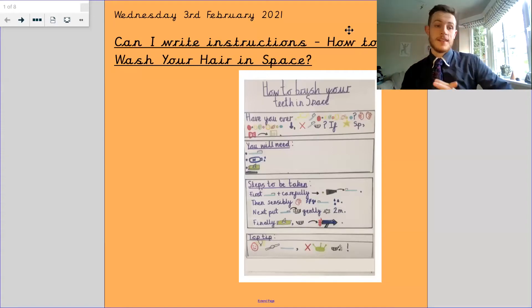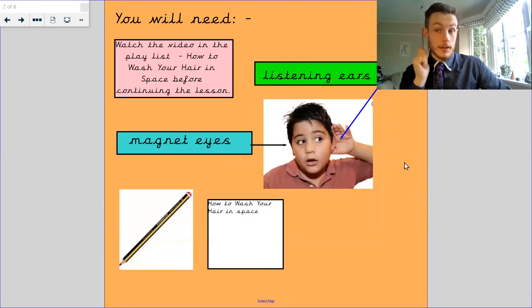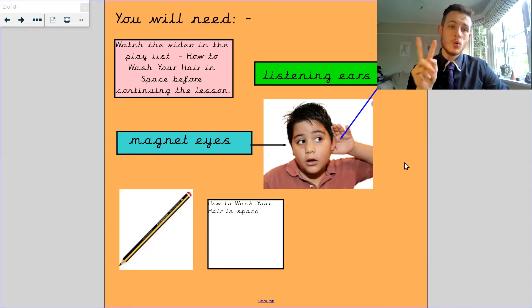Hello Da Vinci, welcome back. This is our English lesson for Wednesday the 3rd of February. Can I write instructions how to wash your hair in space? What you're going to need for this lesson? You're going to need listening ears, magnet eyes, pencil and the paper of how to wash your hair in space that you've done for the last two lessons.